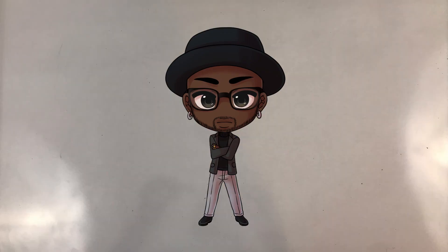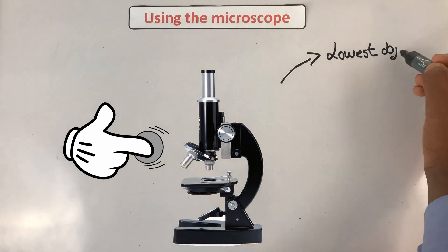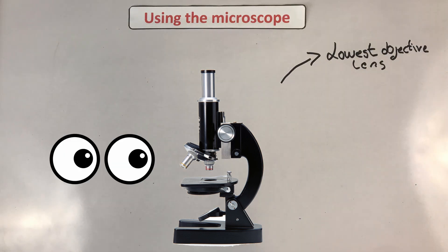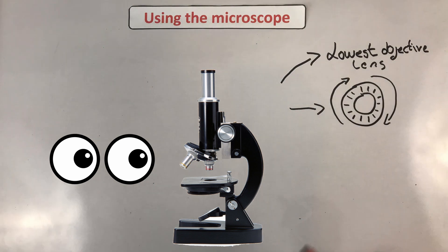Now that your slides prepared, this is how you're going to use your light microscope. Number one, you turn your objective lens to the lowest position. Look at it from the side. Turn your course focusing wheel until it's almost touching the slide.